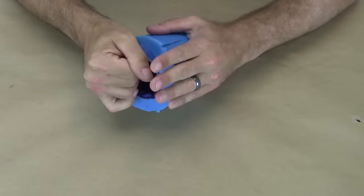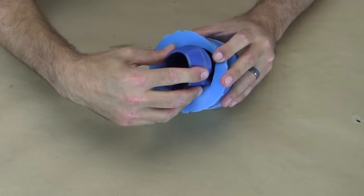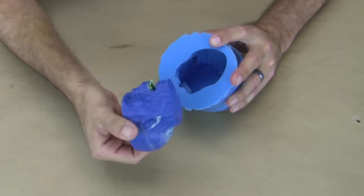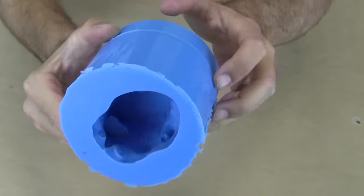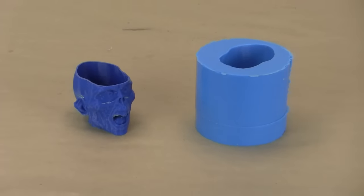Once the silicone is flexed around the part a few times to break the seal, we can carefully pull the skull out of the silicone mold. Voila! We have an extremely detailed silicone mold that can make some really cool parts.